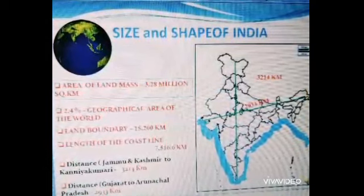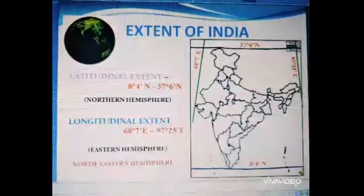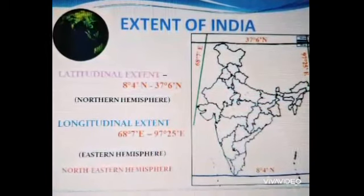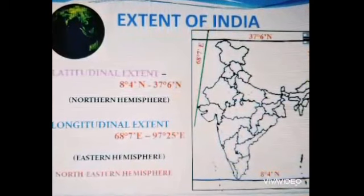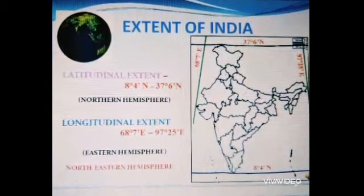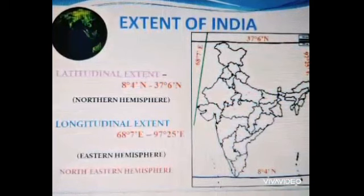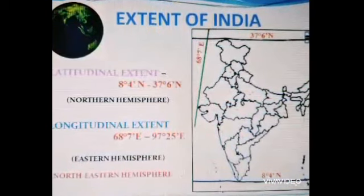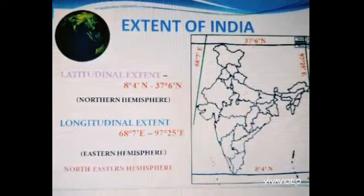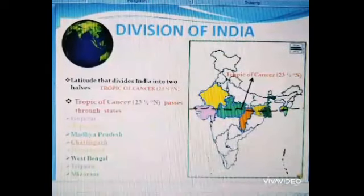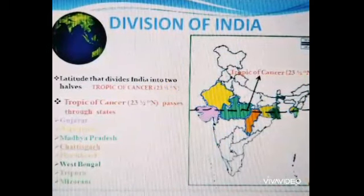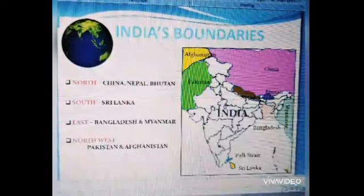Now we will see the location and extent of India. India is located in the southern part of Asia, in the northern hemisphere. The latitudinal extent of India is 8.4 degrees north to 37.6 degrees north. The longitudinal extent of India is 68.7 degrees east to 97.25 degrees east. The Tropic of Cancer at 23.5 degrees north divides India into two equal halves.